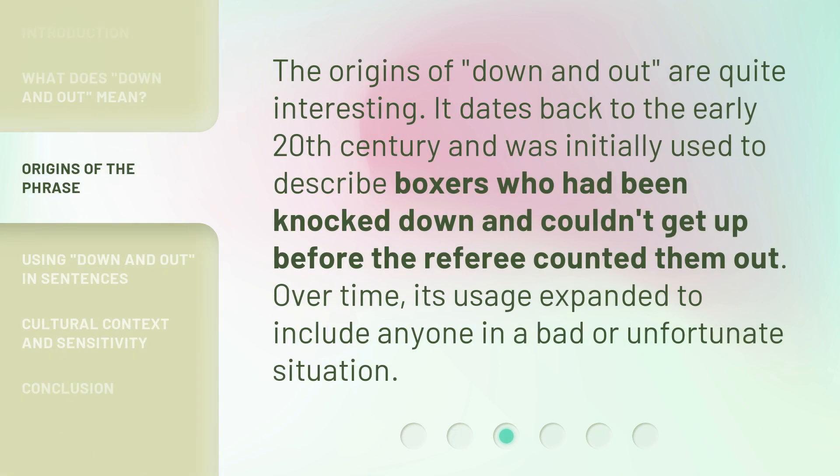The origins of 'down and out' are quite interesting. It dates back to the early 20th century and was initially used to describe boxers who had been knocked down and couldn't get up before the referee counted them out. Over time, its usage expanded to include anyone in a bad or unfortunate situation.